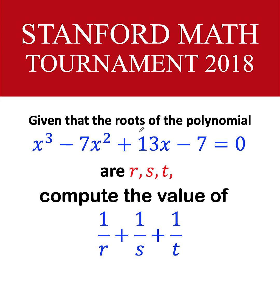Given that the roots of the cubic polynomial x cubed minus 7x squared plus 13x minus 7 equals zero are r, s, and t, compute the value of 1 over r plus 1 over s plus 1 over t.